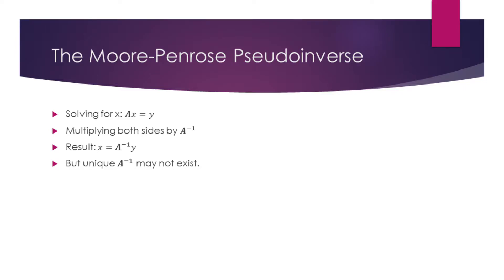Consider the equation matrix A multiplied by the vector x equals vector y. Earlier we saw how we can solve this equation for x by multiplying both sides by the inverse of A.